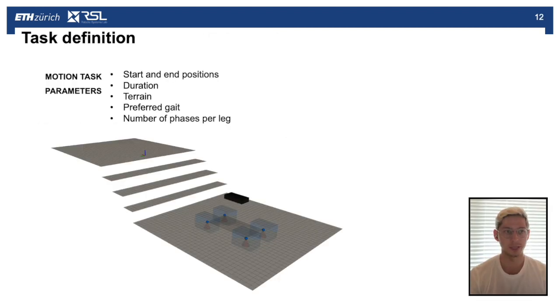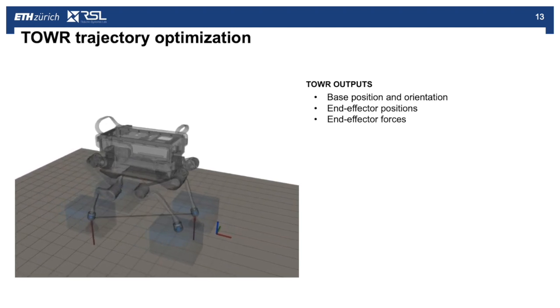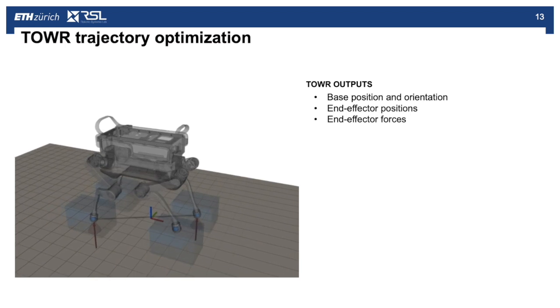Now we're going to define the motion task. This is defined by the following parameters: the start and end positions, the duration for the motion, the terrain, the preferred gait, and the number of phases or steps per leg. Now, given our single rigid body dynamics model and the task, we can run TOWR to generate trajectories.